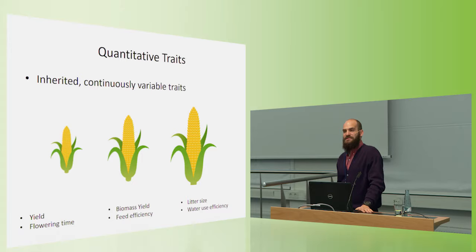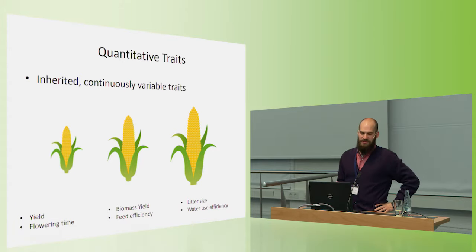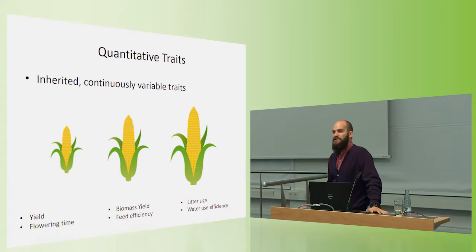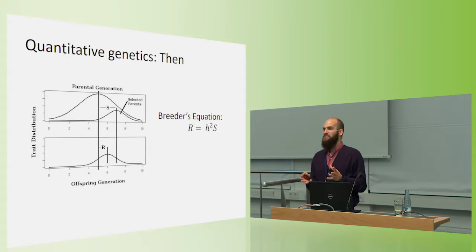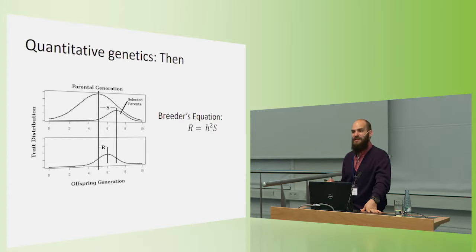So in plant populations and animal populations, most, I would argue, most agricultural traits that we care about are quantitative. So this includes yield and flowering time. And in animals, things like litter size or body weight and so on, these are all continuously variable, likely controlled by a large number of small effect genes. In the past, we've studied quantitative genetics based on distributions of phenotypes using tools like the breeder's equation to understand how a population will change in response to selection.